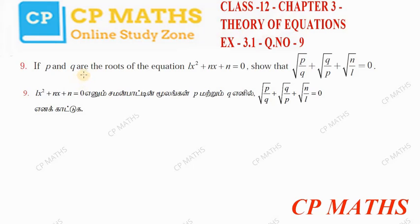So if p and q are the roots of the equation lx square plus nx plus n equal to 0...